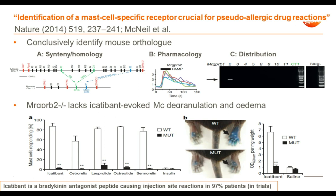This was compelling evidence that mouse B2 is the orthologue of human X2. This is an important point because if you look at the literature, there are many references to human X2 being primate-specific or primate-exclusive, and this paper basically showed that was not correct.